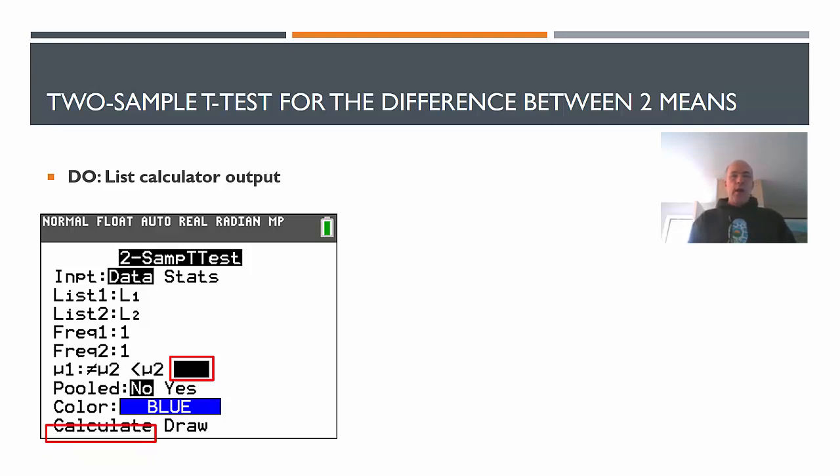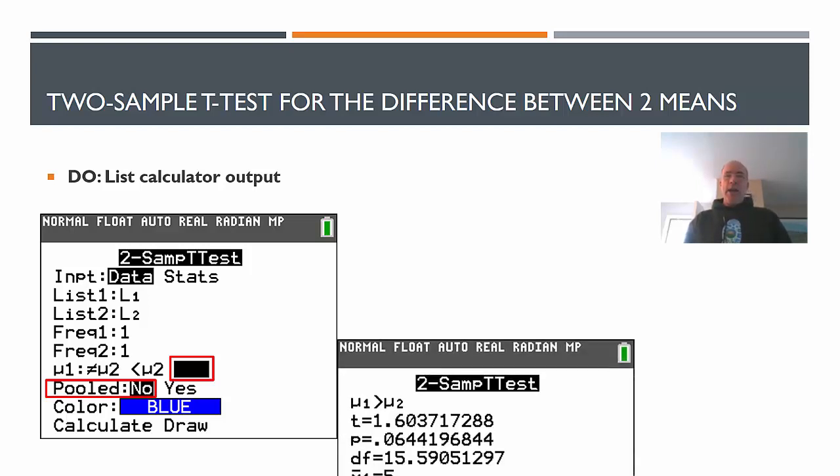There's also this option for pooled. Without getting too in-depth, just know that you will always say no. There's a reason down the road where you might want to say yes. It's outside the scope of what we're going to do in AP Stat. Just leave pooled off. And if you do all that, you will get computer output here.